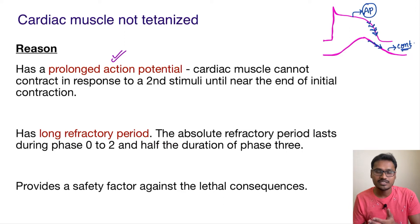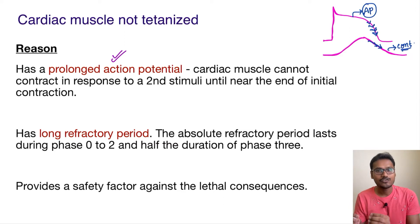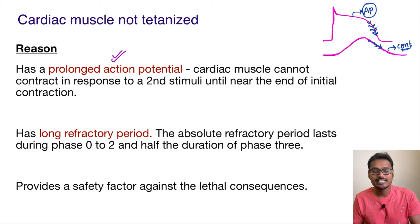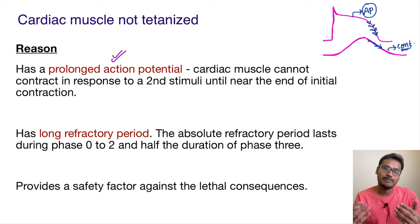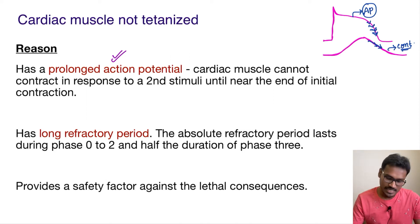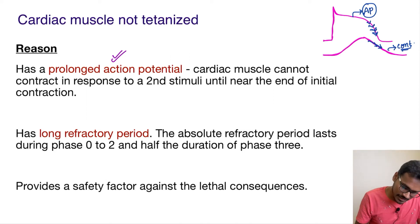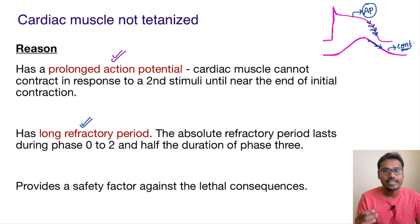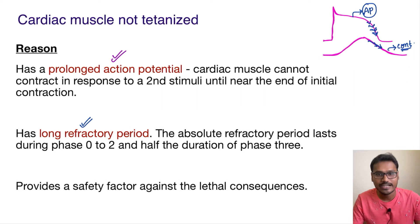Since the action potential is taking more time, the end of contraction has already happened. So the second stimulus will not be able to generate a new impulse. The second reason is it has a very long refractory period.